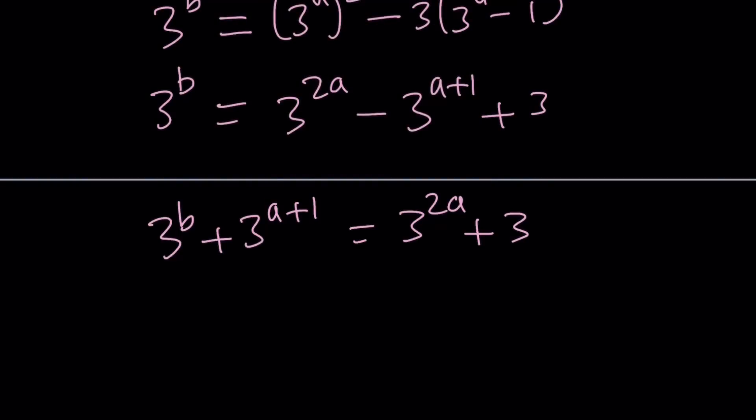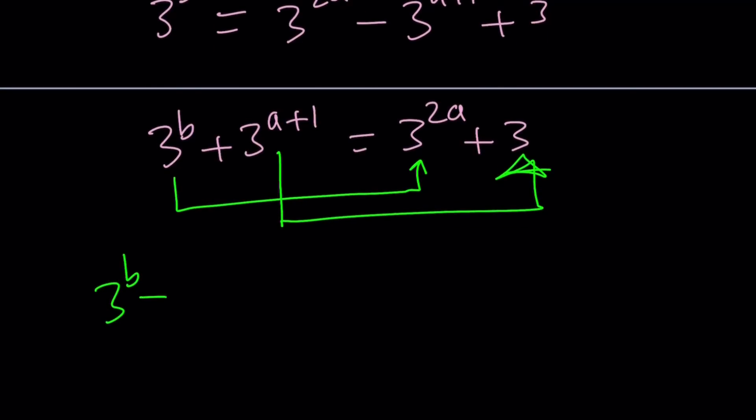I'm going to set the powers equal to each other. One scenario is, these two can be equal, and these two can be equal. That's one scenario. Let's take a look at it. 3 to the power b equals 3 to the power 2a, and 3 to the power a plus 1 equals 3. Let's see what this gives us. This gives us b equals 2a, and a plus 1 equals 1.